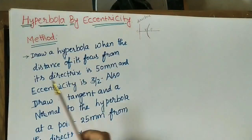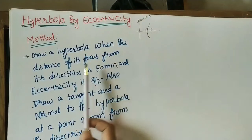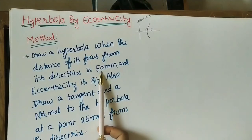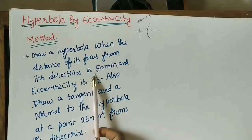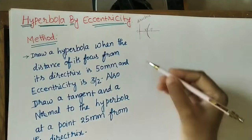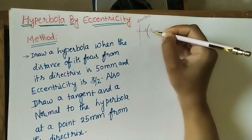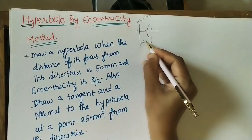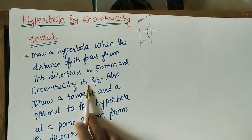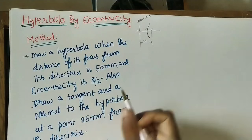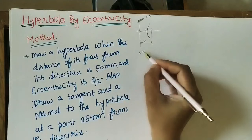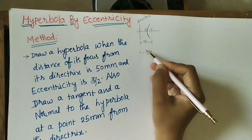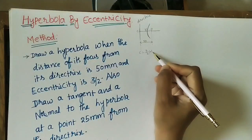For doing this hyperbola, take the question: draw a hyperbola when the distance of its focus from its directrix is 50 mm. So the distance between focus and directrix is 5 cm. The eccentricity — always remember we use small 'e' — is given as 3/2, which equals 1.5, and this value is greater than 1.